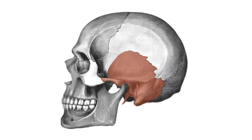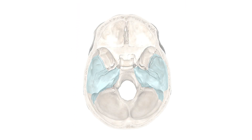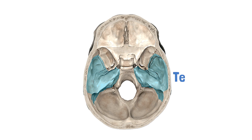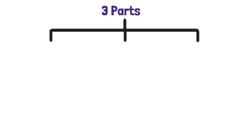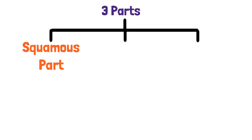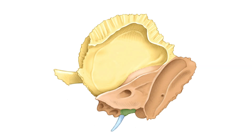Let's have a look. This is the lateral view of the bone, and the bone shaded in brown is the temporal bone. This is the superior view of the base of the skull, and the blue shaded bone is the temporal bone. The temporal bone can be divided into three parts: the squamous part, tympanic part, and the petrous part. In this lateral view, the part shaded in yellow is the squamous part, in green is the tympanic part, and the brown shaded part in the medial view is the petrous part.